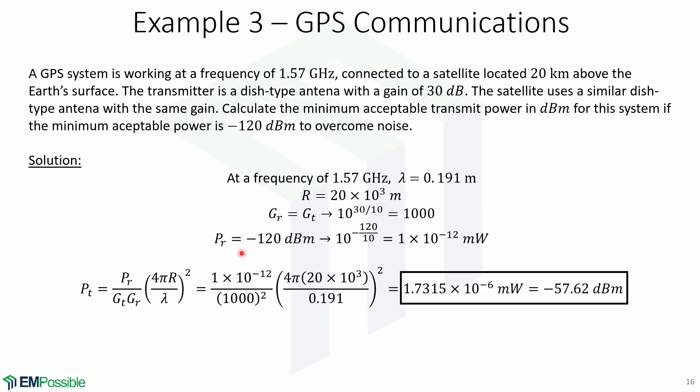The received power should be -120 dBm, which converted to milliwatts is equal to 1 × 10^(-12) milliwatts. Now we can plug all the terms together in the equation and we obtain that the minimum acceptable transmit power is equal to 1.73 × 10^(-6) milliwatts or -57.62 dBm.